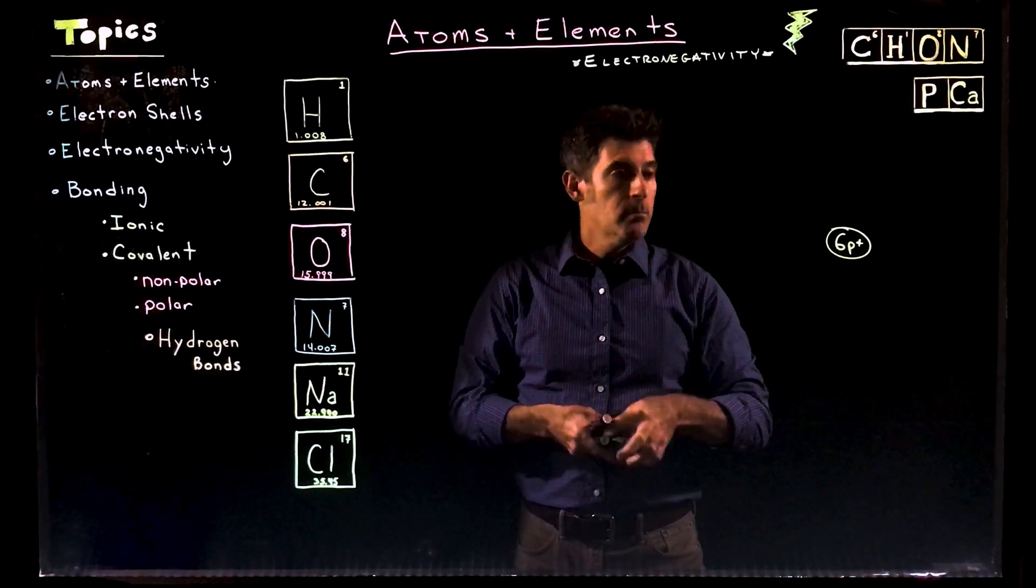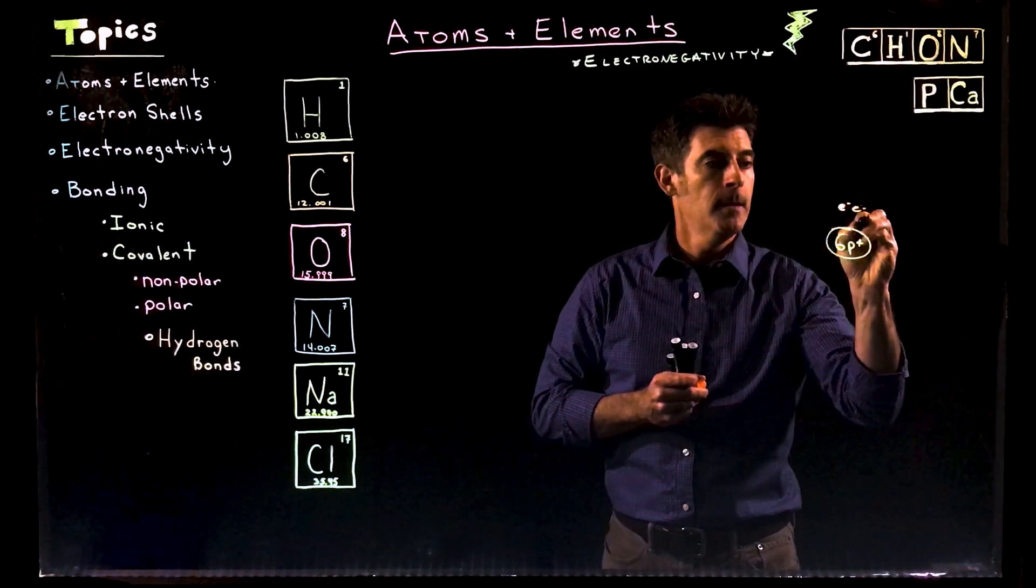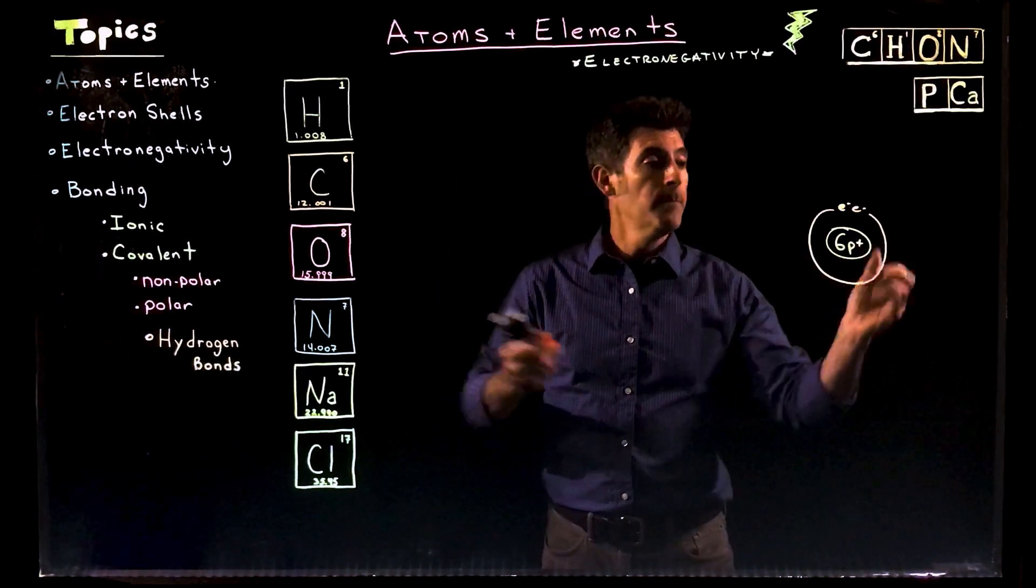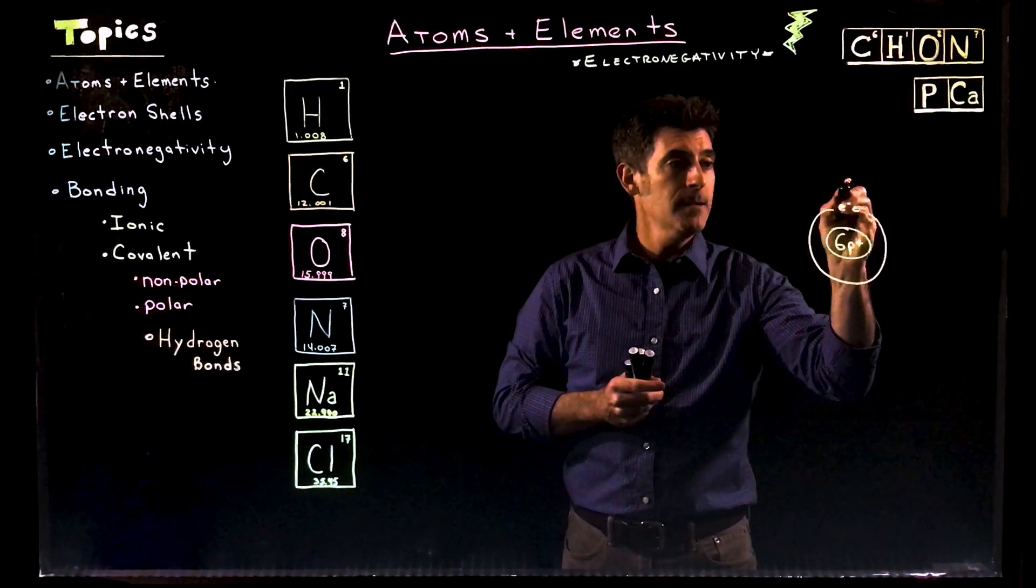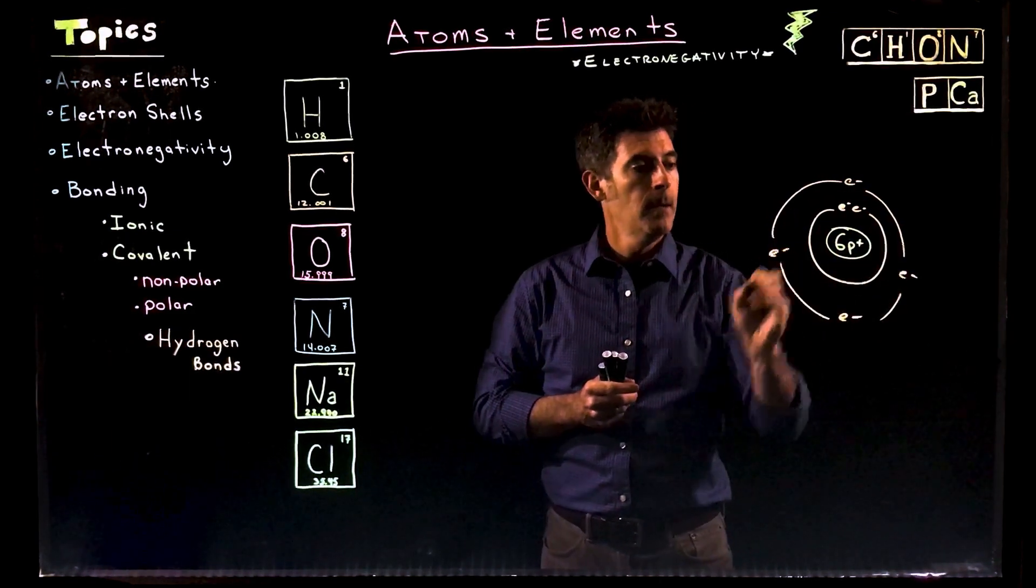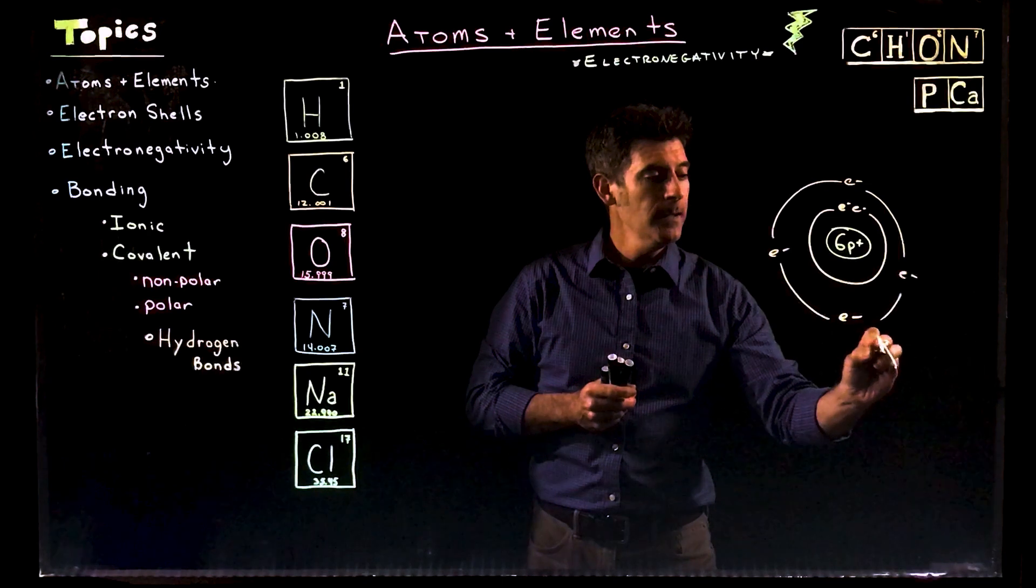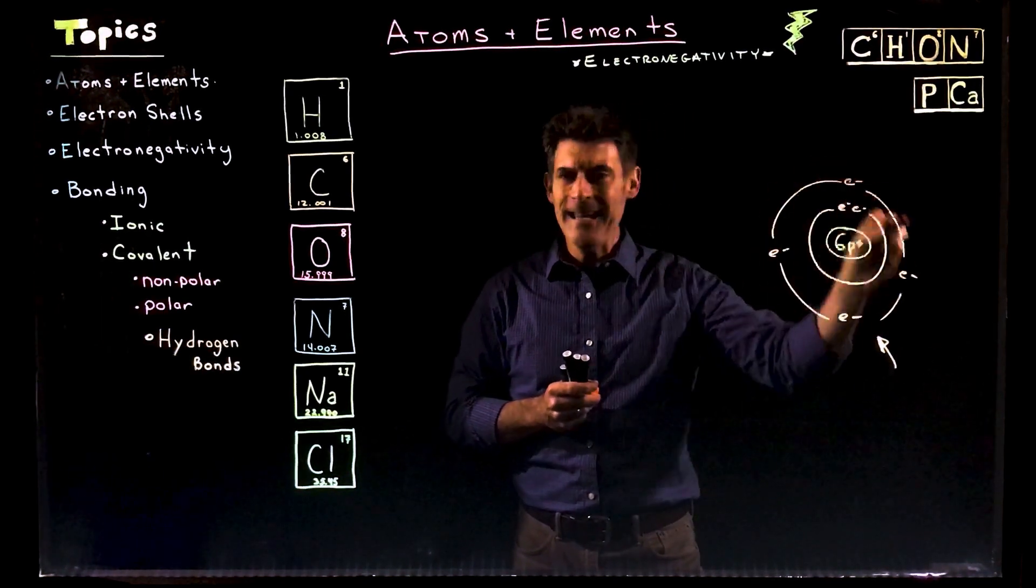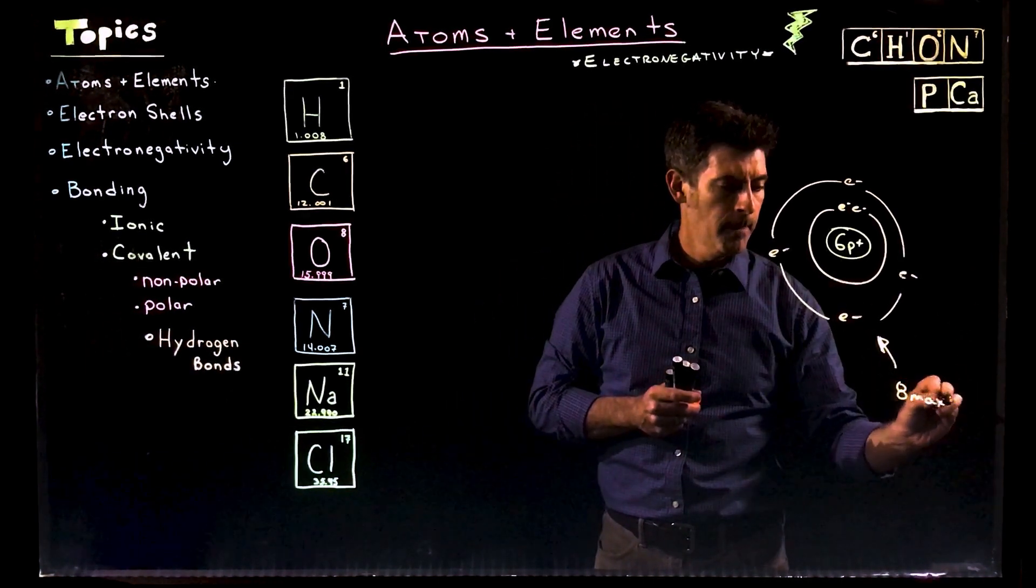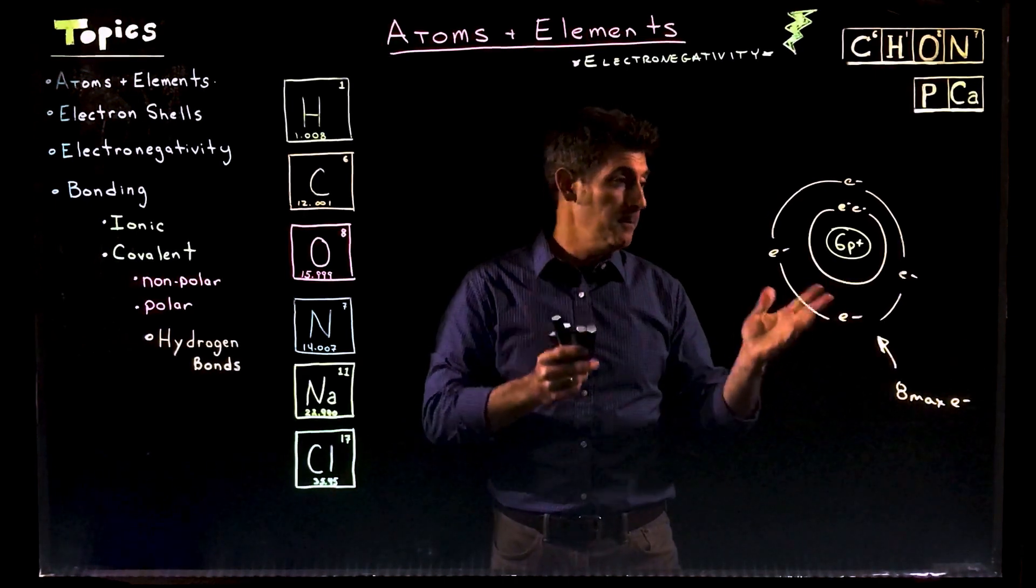Six electrons. So that means we have two electrons in what we call a first electron shell. But there's six, so that means we have four more. So we have to do a second electron shell. And in that second electron shell there are four more electrons. It's either half empty, half full, but it's half.